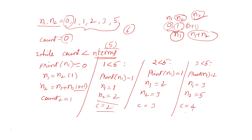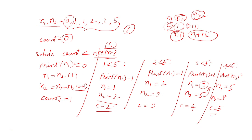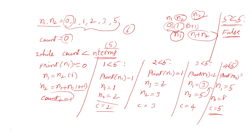Count is increased to 4. Is 4 less than 5? Yes, it is true. It will print n1 — n1 is 3. Then the values change: n1 becomes equal to n2 which is 5, and n2 becomes n1 plus n2 — 5 plus 3 equals 8. Count is increased to 5. Now checking the while loop condition: count is 5 and n terms is also 5. Is 5 less than 5? No, it is false. That is why the while loop will terminate here.